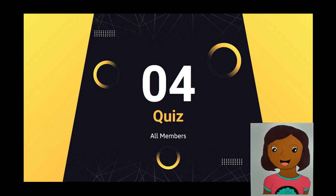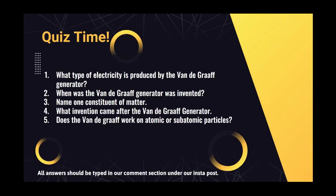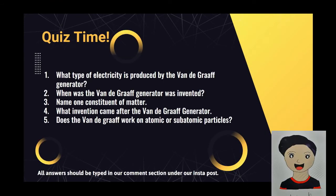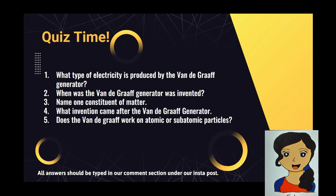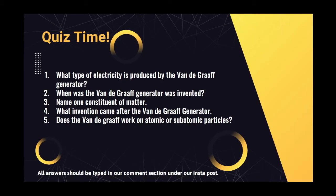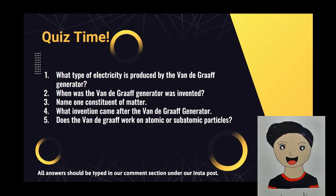Now it's time for the long-awaited quiz, which will be done by all members. We have five questions and all answers should be typed in our comment section under our Instagram post. Question 1: What type of electricity is produced by the Van de Graaff generator?